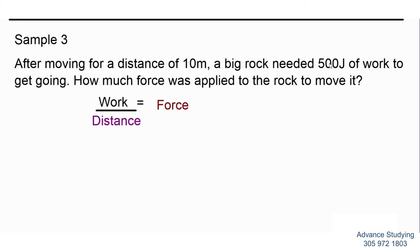Plug in your values: 500 joules of work divided by 10 meters of distance. Work is always on top. If you divide 500 over 10, you get 50 — I simply cancel one zero here and one zero there, and I have 50 over 1, which is 50 newtons.